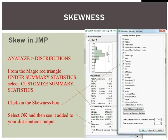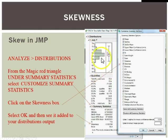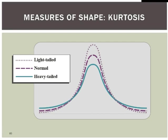In Excel you can use the SKEW function to calculate skew, but it uses a slightly different and more complicated formula, making it harder to compare to anything you might do in JMP or by hand. So I would suggest either calculating skew by hand using that formula, or going into JMP — still in our analyze distribution window — under the magic red triangle, customize your summary statistics, and click on the skewness option. It will add that as another value to your summary statistics. In this example we have negative skew, likely because of one outlier that's pulling the mean down from the median and the mode.